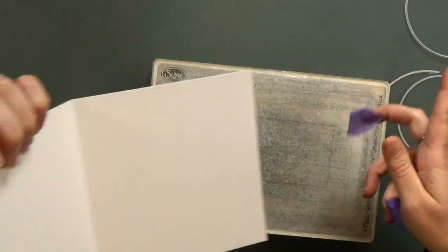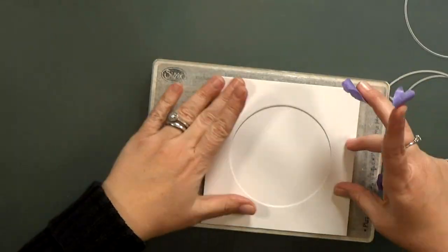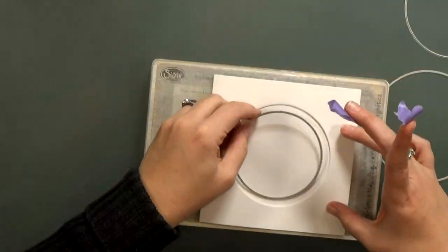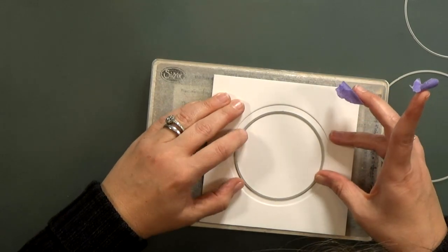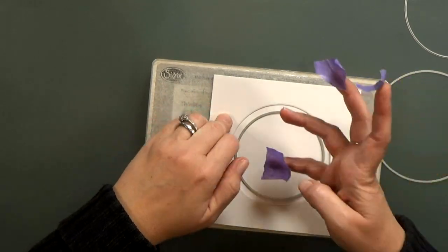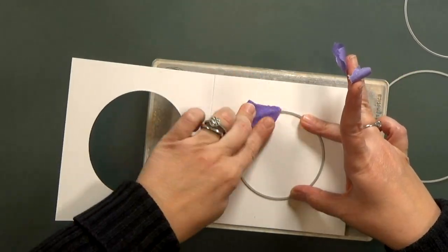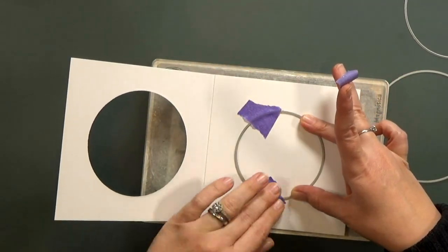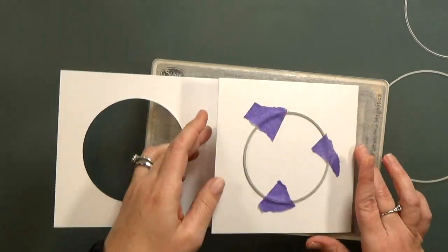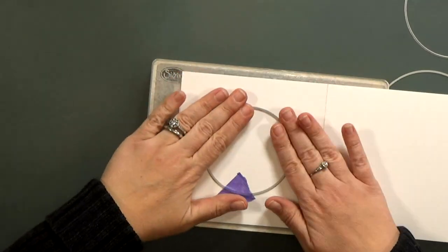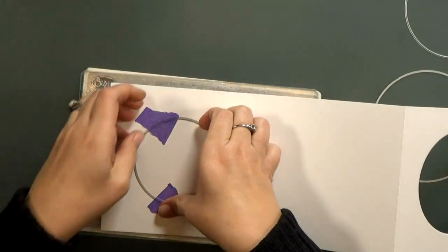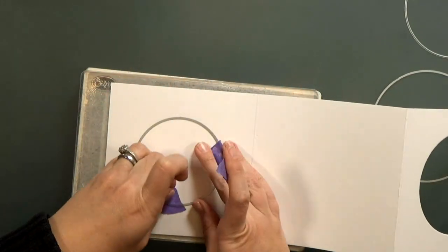I'm going to fold the card back up and I'm going to center the smallest die on the inside flap. Once I get it lined up I'll tape it in place and then I'm going to be sure to open the card all the way up and then run it through my big shot again. And when I get this window removed I'm going to have a tunnel card.